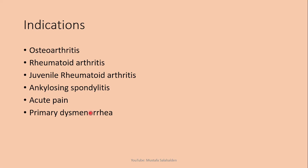Now for the indications. Celecoxib works very well with arthritis — including osteoarthritis, rheumatoid arthritis, juvenile rheumatoid arthritis, and ankylosing spondylitis. It also works very well for acute pain and primary dysmenorrhea.